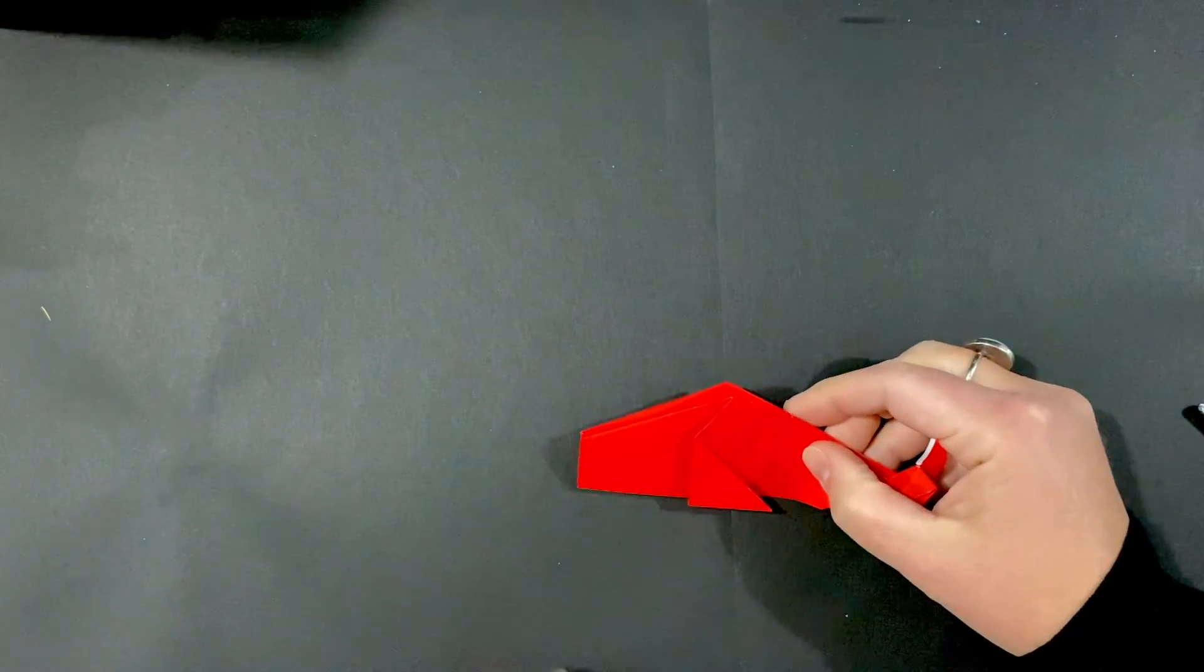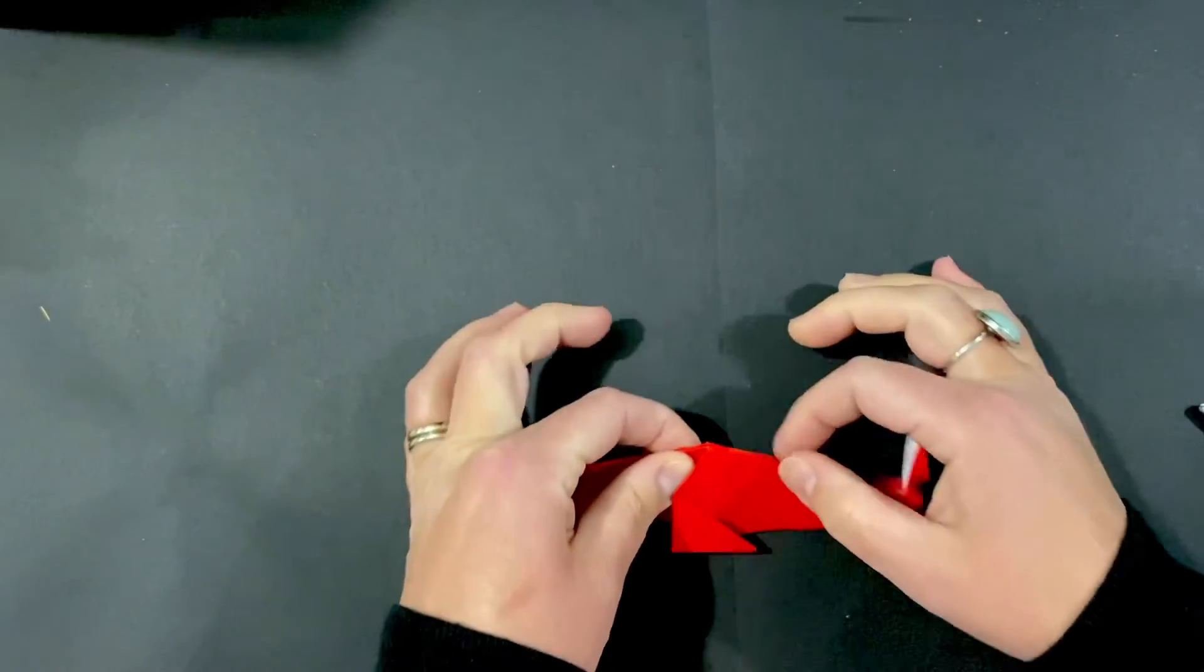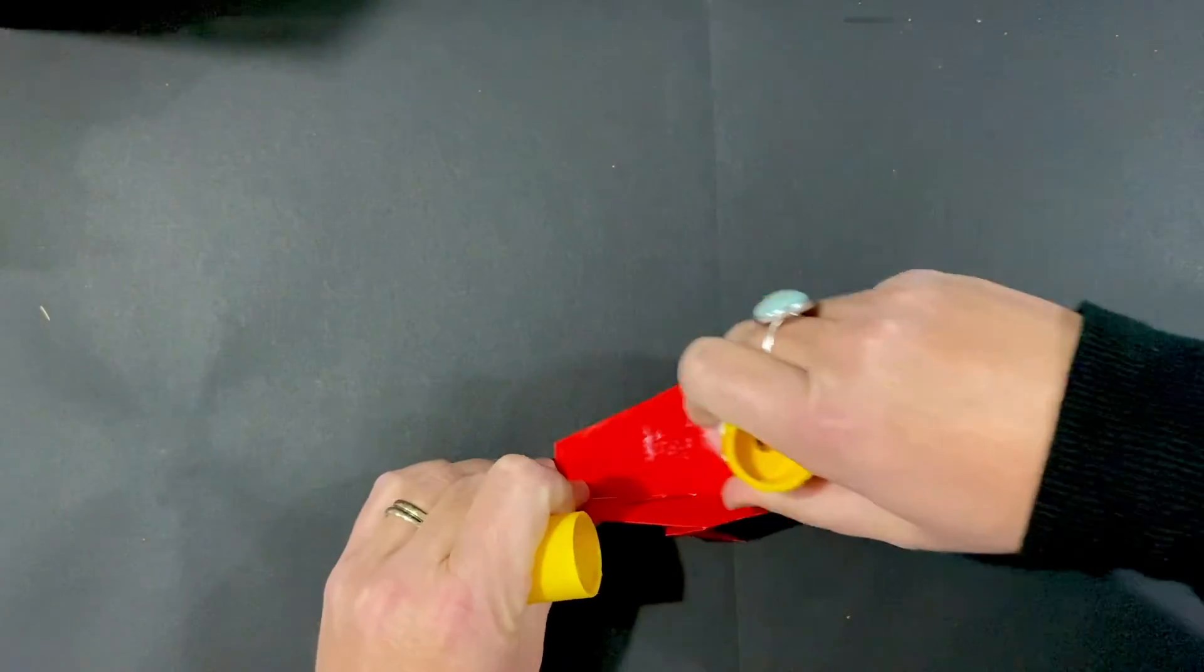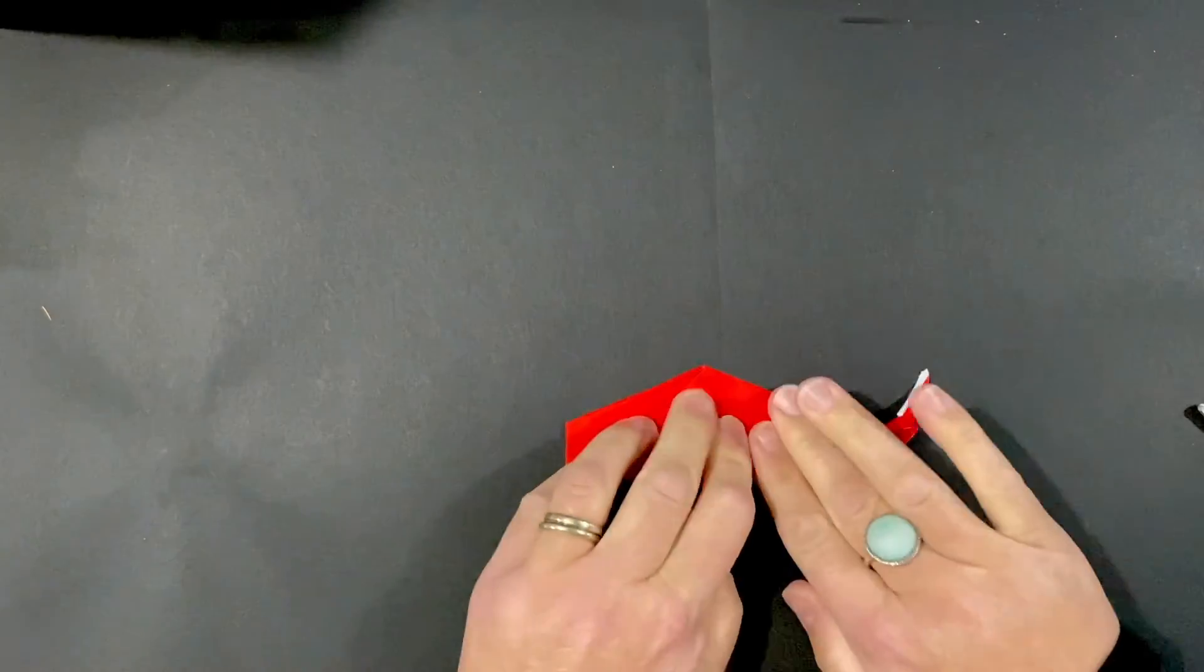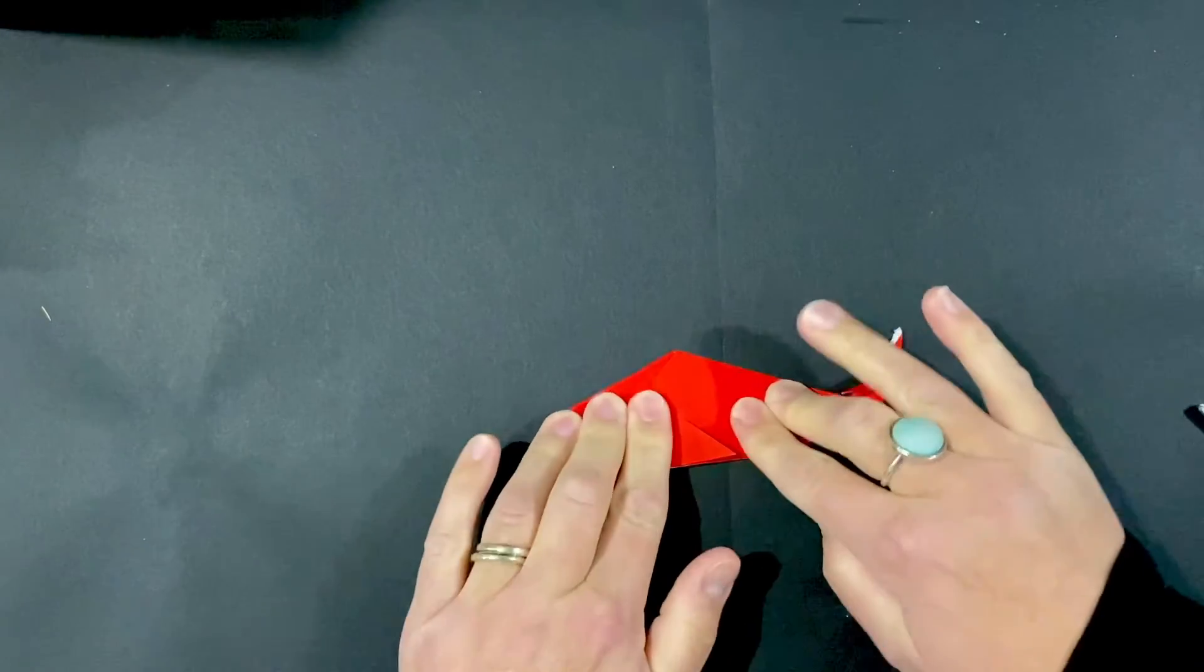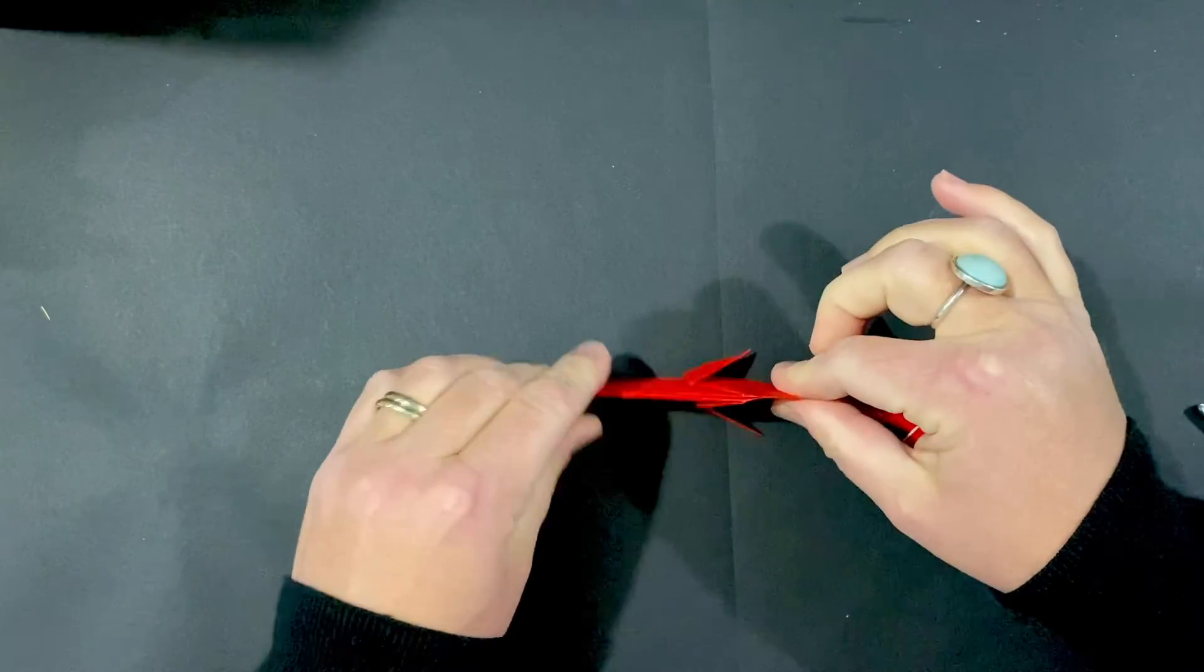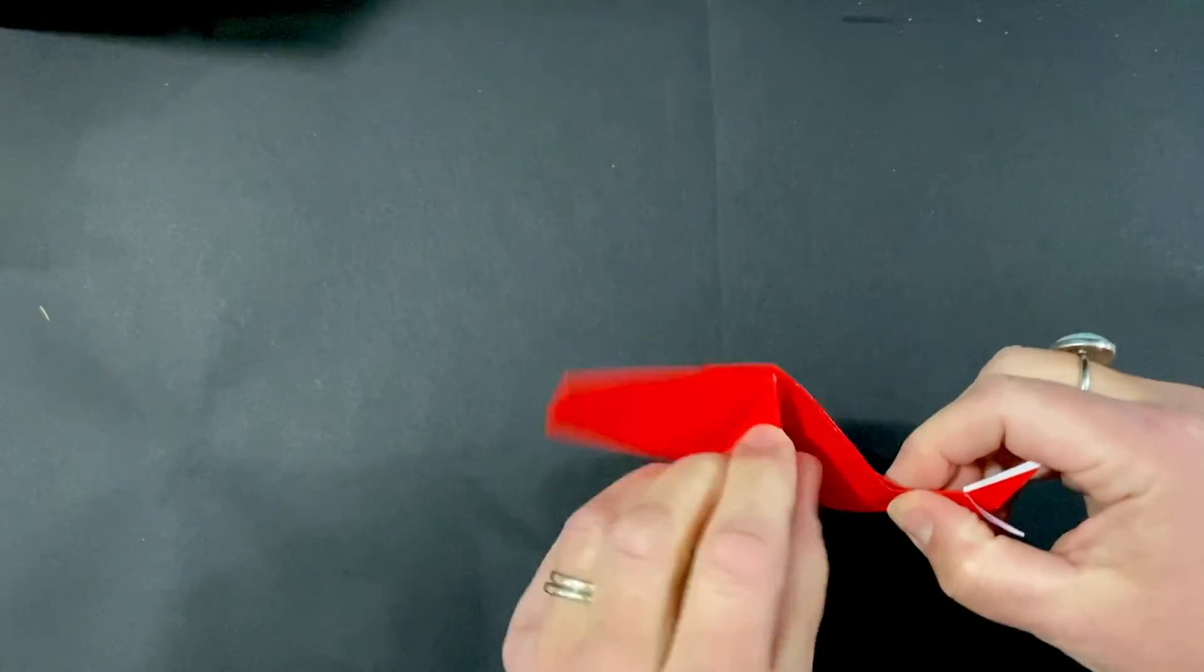Now, the paper that we use to make our whale is copy paper, so the whale will not stay together. You will need to open it up at the very end and put some glue along the inside, and close it up and hold it just for a minute, or really just a few seconds. And then it will stay closed and you have an origami whale.